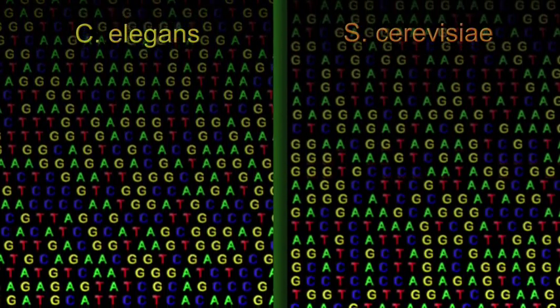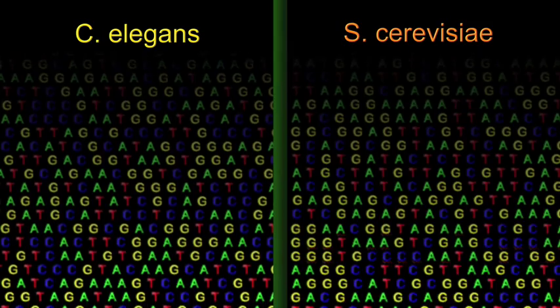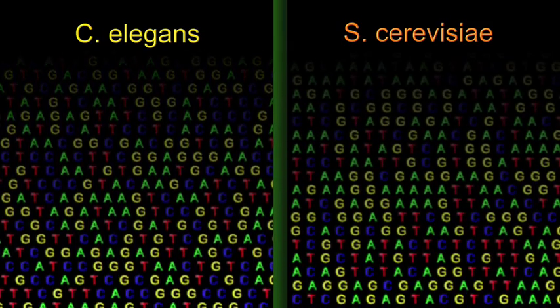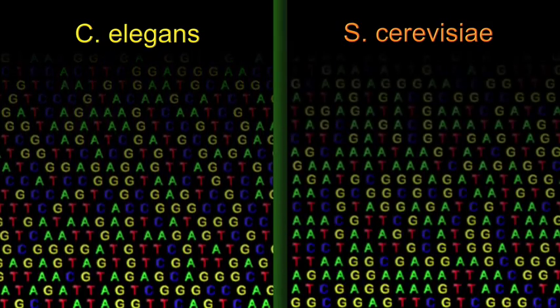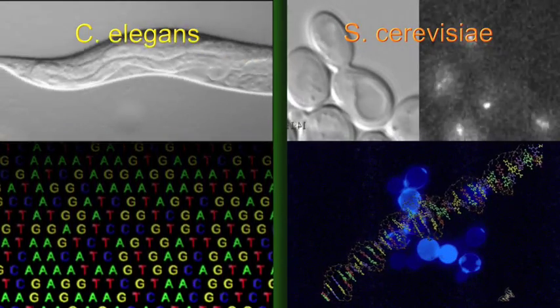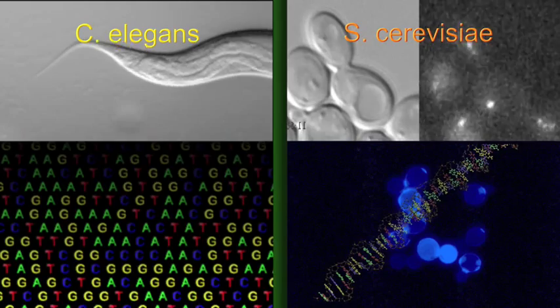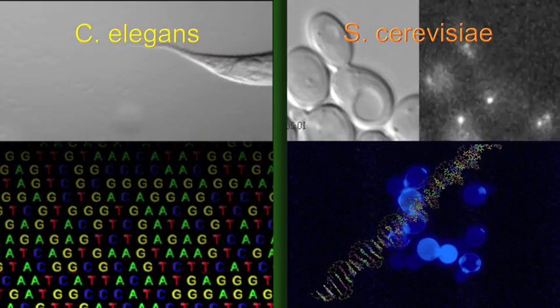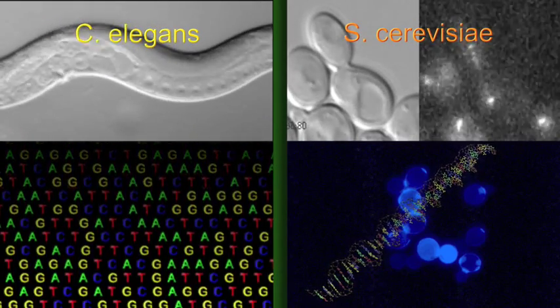Recently, we have sequenced and compared the entire genomes of both baker's yeast and a worm. The genes used by the yeast, a very primitive organism, are primarily those that deal with the core biochemical functions that all organisms must perform.